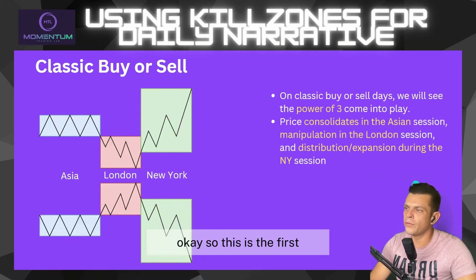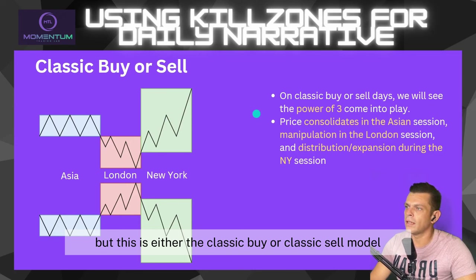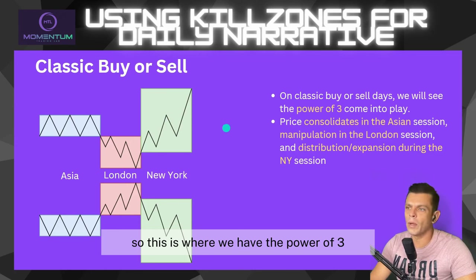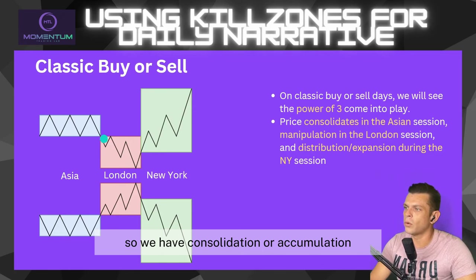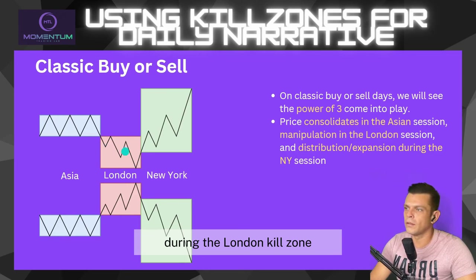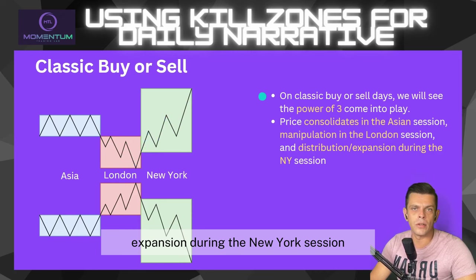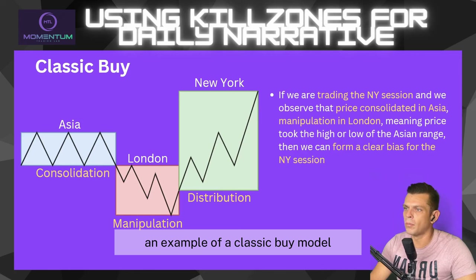The first market profile is the classic buy or classic sell model, where the Power of Three comes into play. We have consolidation or accumulation during the Asian kill zone, then manipulation during the London kill zone, and then distribution or expansion during the New York session.